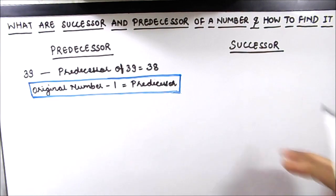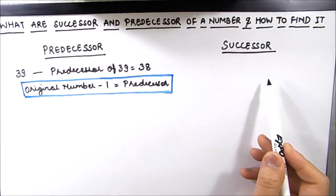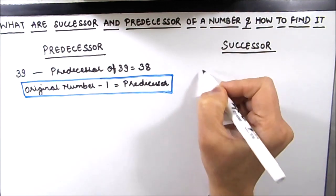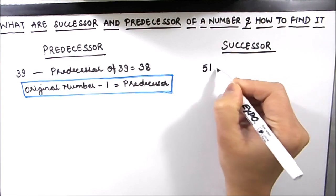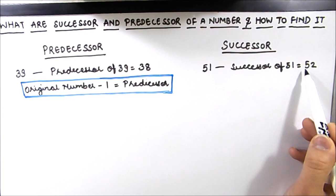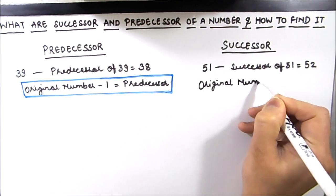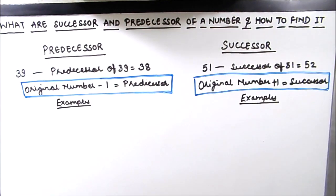To find the predecessor of any number, we just need to subtract 1 from the original number. On the other hand, a successor is a number that succeeds the original number — the number which comes immediately after it. For example, the successor of 51 is 52. To find the successor of any number, we add 1 to it.